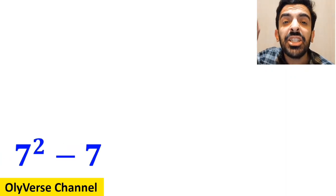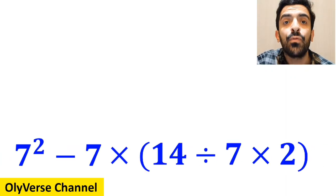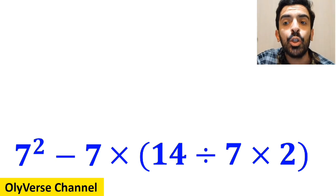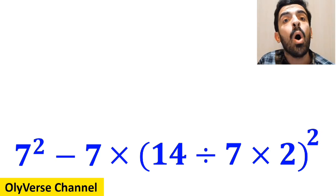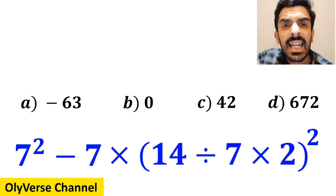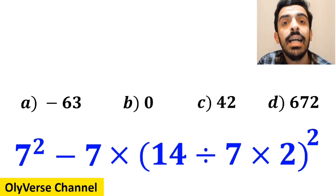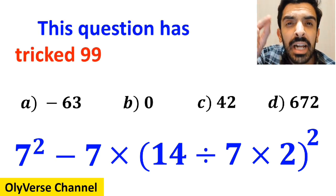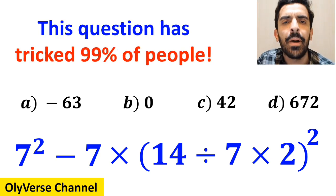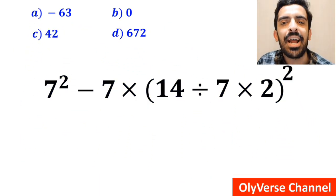What is the value of the expression 7 squared minus 7 times open parenthesis 14 divided by 7 times 2 close parenthesis all squared? Which option do you think is the correct answer to this question? This expression has tricked 99% of people. Let's go and simplify and solve it together.